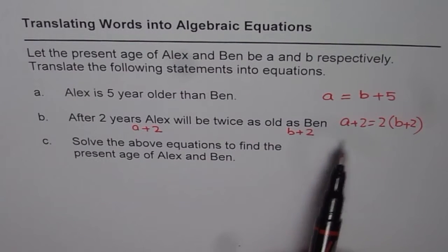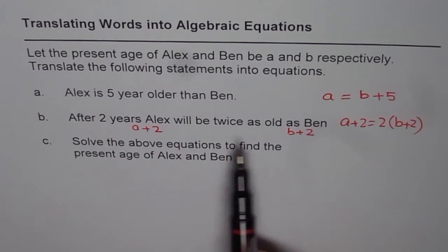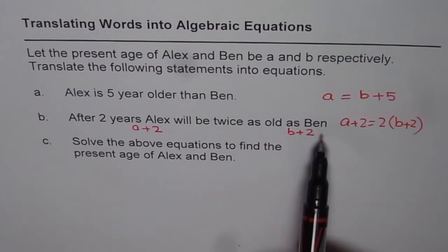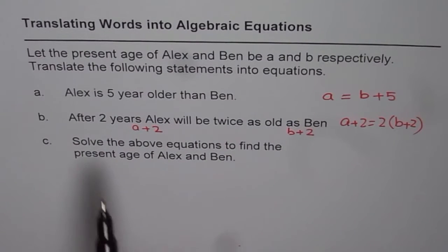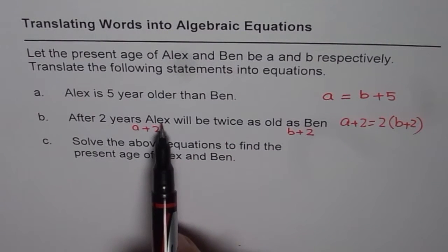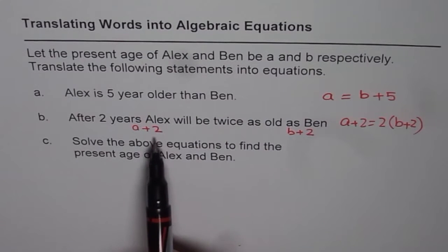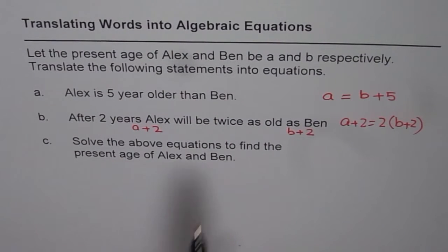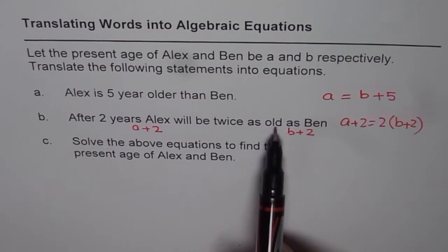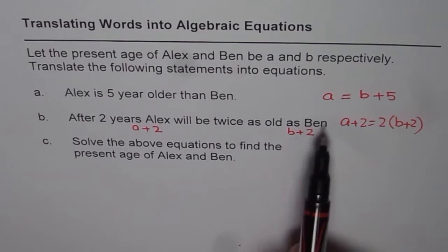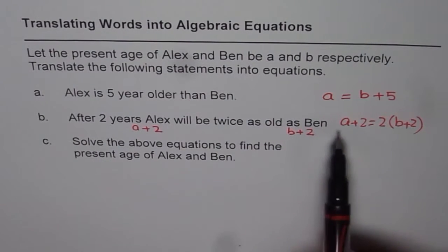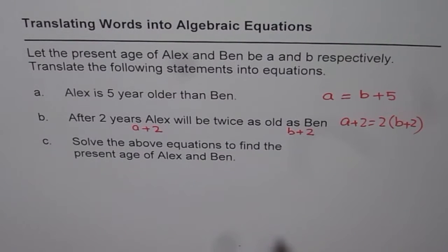Remember, in each and every age problem, with time, you age, right? So you have to consider that part. After 2 years, Alex will be 2 years older, so it becomes A plus 2. B plus 2 will be twice as old as Ben. Ben will be also B plus 2. So twice, that is how you get your equation.